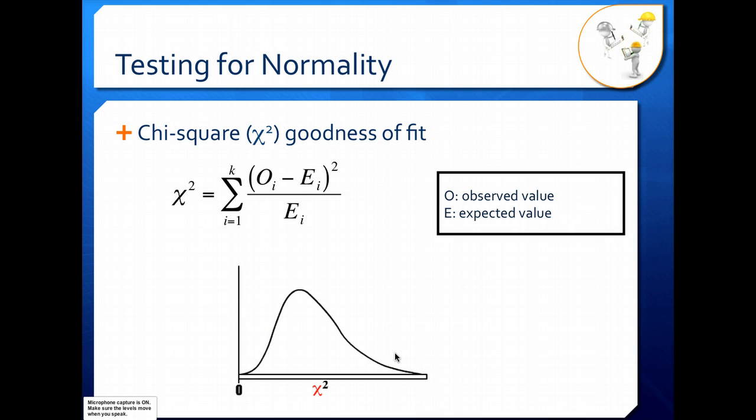You can use any of these tests to check normality, depending on your statistical software package — you may prefer one over the other, but all of them will tell you whether or not your data are normally distributed. Usually you can make that assumption, but if you're not sure or something looks funny in your data, it's a good idea to go ahead and check it. Keep in mind that when checking for normality, you need a good sample size — 30 was the minimum for all of these tests, and most require more. Make sure you have a good data set so your results will be accurate.